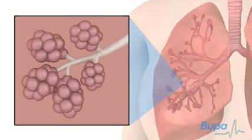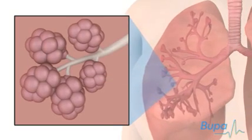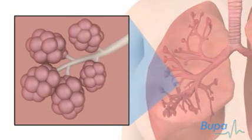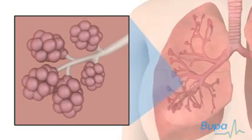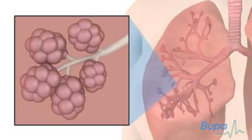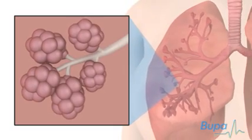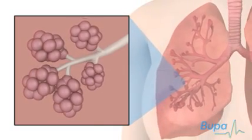In healthy lungs, oxygen is taken into the body through the bronchi and passes into the blood via the alveoli.